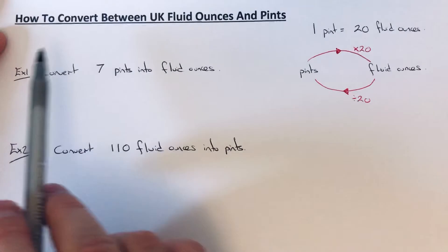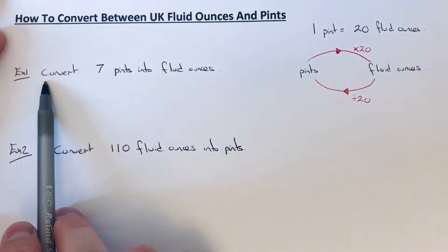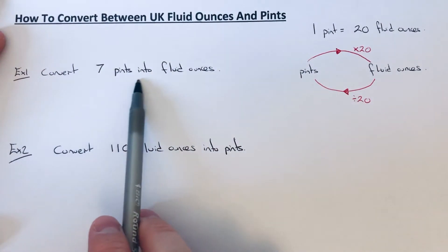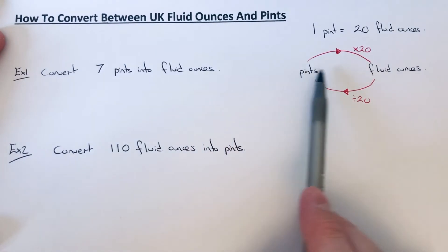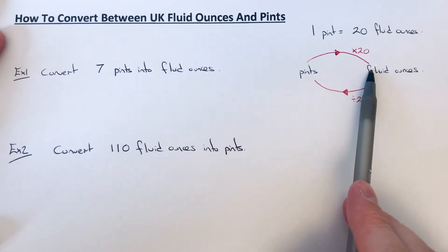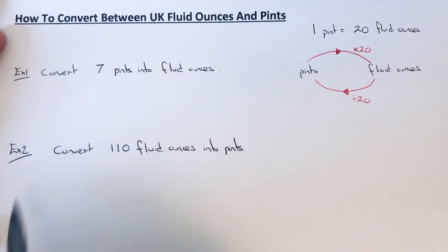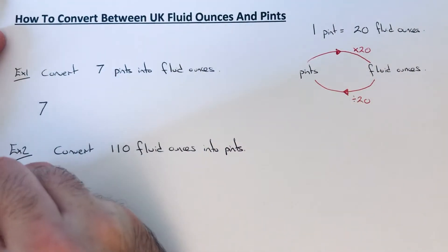Let's have a look at the first example. We need to convert seven pints into fluid ounces. So pints to fluid ounces, you need to times the number by 20. If you write the seven down first...